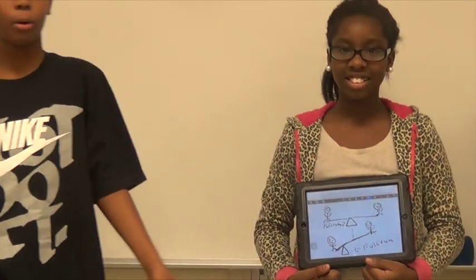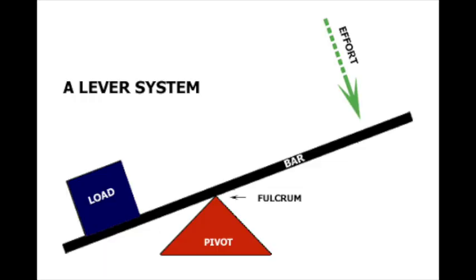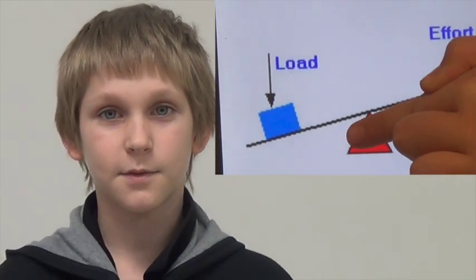A lever is a rigid bar or a board that is free to move around the fixed point, also known as a fulcrum. A lever can reduce the amount of force needed. A lever can move the fulcrum away from the force or closer to the load. A fulcrum can be placed at a different location on the beam.